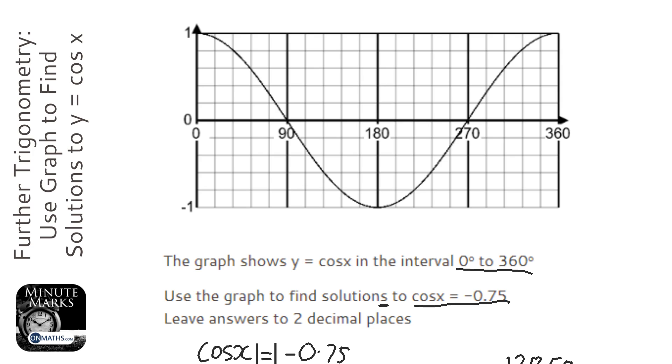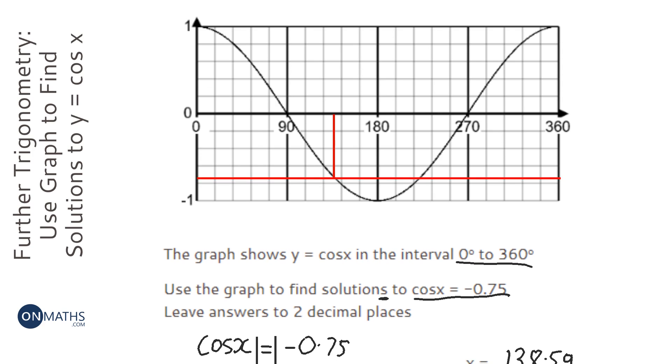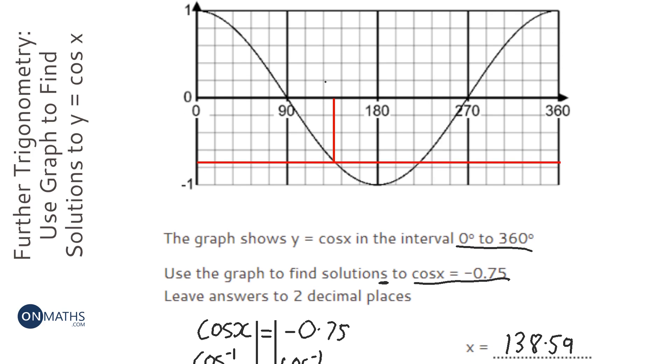a line across from roughly where 0.75 is, so 0.75 is probably roughly there somewhere, and we read off the values. So we know that one already, that one is the one given to us in the calculator, 138.59 blah blah blah.